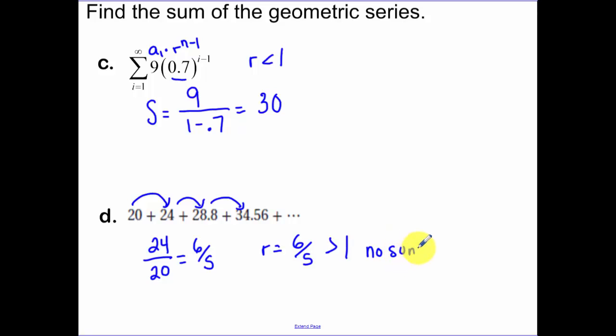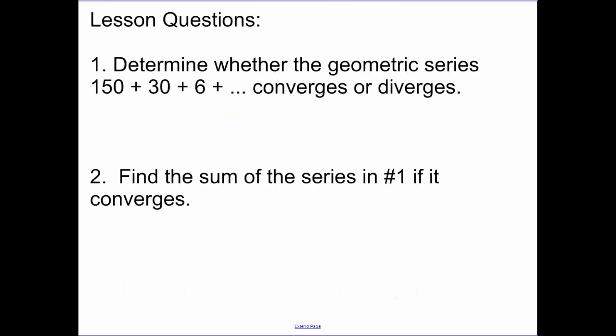Versus all the other ones that have a sum. That means this diverges and all the other ones converge. There are your two lesson questions. So you're going to tell me whether this converges or diverges and then find the sum.